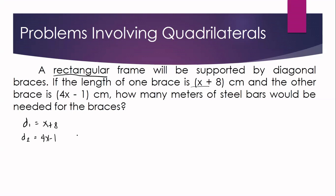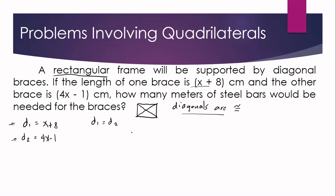The question is how many meters of steel bars would be needed for the braces. To identify the length of the steel bars, you need to identify the length of diagonal 1 and diagonal 2. The theorem to apply is that in a rectangle, diagonals are congruent. So we can set up the equation: diagonal 1 is equal to diagonal 2.